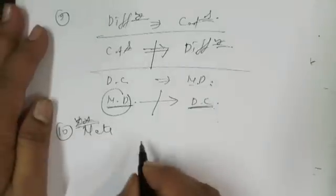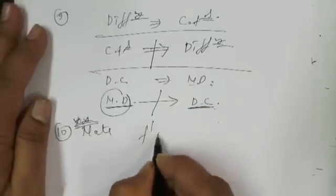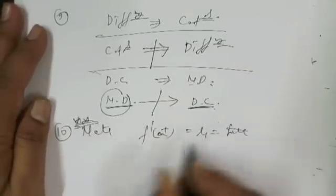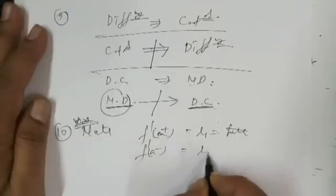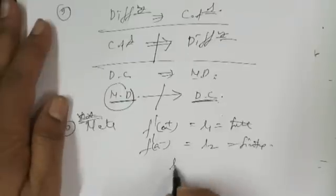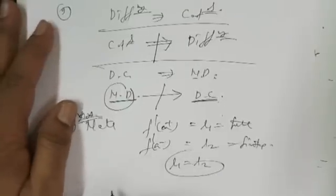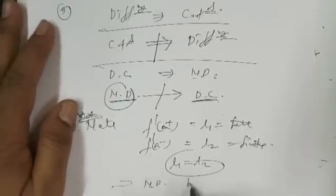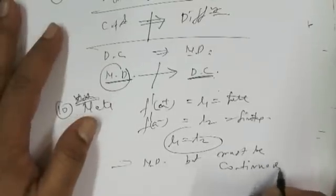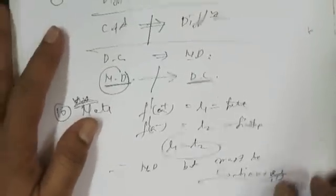Important note — double star: If a function's right-hand derivative is a finite value and left-hand derivative is also a finite value, and both are not equal (L1 ≠ L2), then the function is not differentiable, but must be continuous.